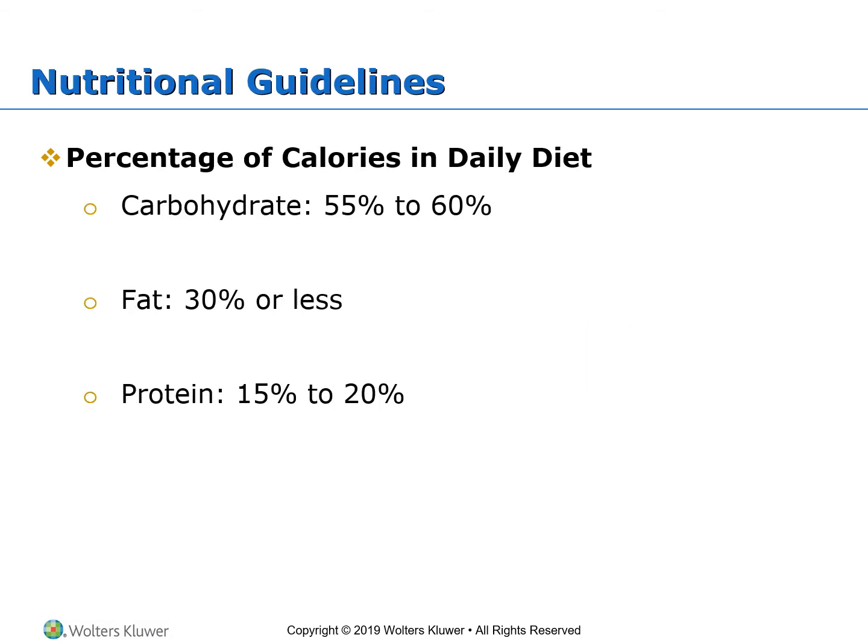Daily nutritional needs may vary by individual and by the state of anabolism or catabolism for that period of time. However, there are typical recommendations for calories from each of the three main nutrient types. A balanced diet has 55–60% of energy from carbohydrates, 30% or less from fat, and 15–20% from protein.